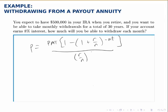All we need is the payout annuity formula, because this is the payout annuity that starts with a lump sum and regular withdrawals are taken, as opposed to regular payments being made building toward a lump sum. So we're using the payout annuity formula, and we pay attention to what we're given and what we're asked for.